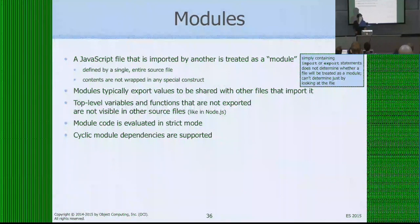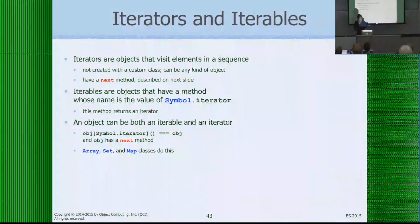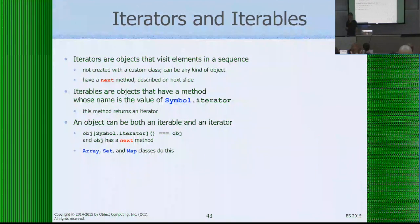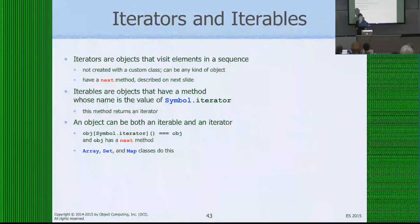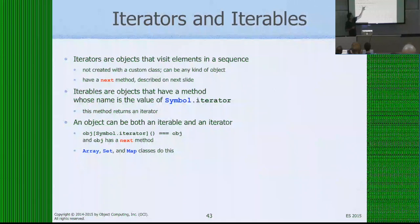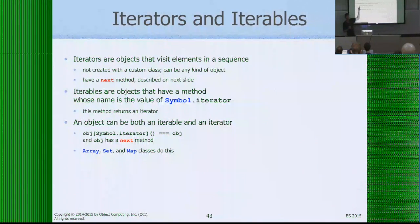I wish I had time to talk about modules but I need to skip past that — grab my slides or find me at lunch. I really want to talk about iterables and iterators. An iterator is an object that visits elements in some sequence — specifically, any object that has a `next` method. An iterable is an object that has a method whose name is the value of `Symbol.iterator`. It's possible and common for an object to be both — if you call `obj[Symbol.iterator]()` and it returns the same object, and that object also has a `next` method, then it's acting as both iterable and iterator.